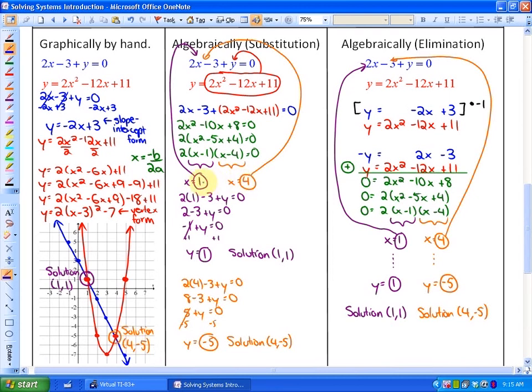In order to find out what y is, you can substitute, because solving is finding out where the functions intersect, you could substitute 1 and 4 into either of these original functions. When I substitute 1 into this original function here and solve for y, I get y is equal to 1. So one of your solutions is 1, 1.